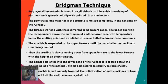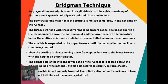In the Bridgman technique, the material to be crystallized is placed in a platinum crucible that is tapered conically with a pointed tip at the bottom. The polycrystalline material is completely melted in the hot zone of the furnace. The furnace has three zones: an upper zone with temperature above the melting point of the material, a lower zone with temperature below the melting point, and an adiabatic zone acting as a baffle between them. The crucible is suspended in the upper furnace until the material is completely melted.